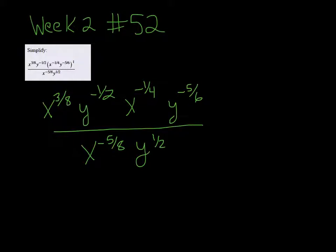So in the top, I've got the like variables x and x, so I need to add their exponents since we're multiplying the bases. So I want to take 3 eighths and add negative 1 fourth. And my calculator tells me that's the same as 1 eighth. So that's x to the 1 eighth.